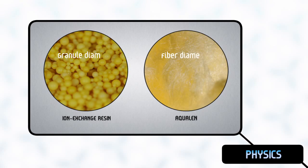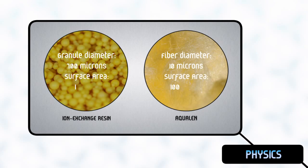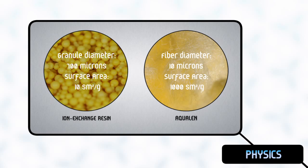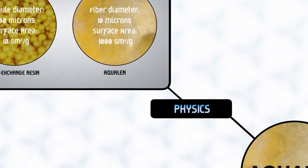Aqualan has a considerably larger outer surface compared to traditional absorbents, due to the unique shape of the material. This results in a higher rate of removing impurities from the water.